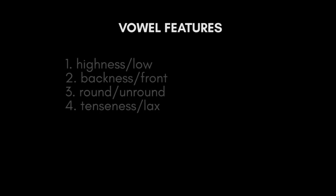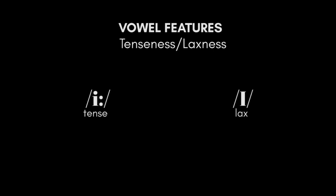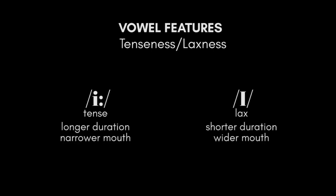Now we add features for vowels. Some features used in consonants also apply to vowels: high, low, back, and round. There are two more: tense and lax. Starting with tenseness and laxness — is the vowel tense or lax? An example of a tense vowel is [iː], and a lax vowel is [ɪ]. Tense vowels usually have a longer duration and a narrower mouth width, while lax vowels have a wider mouth and shorter duration.